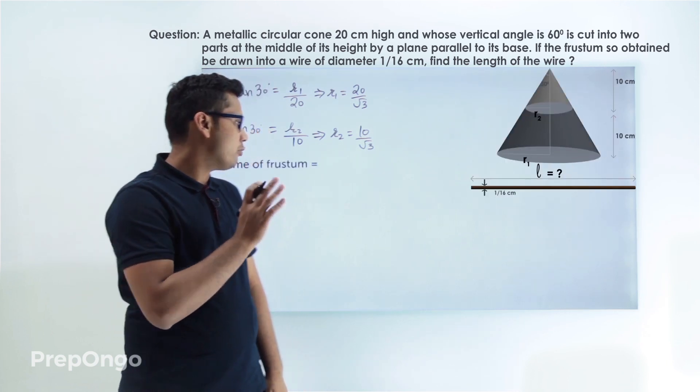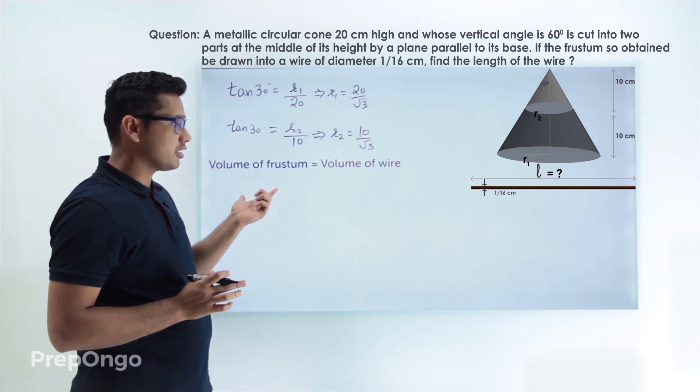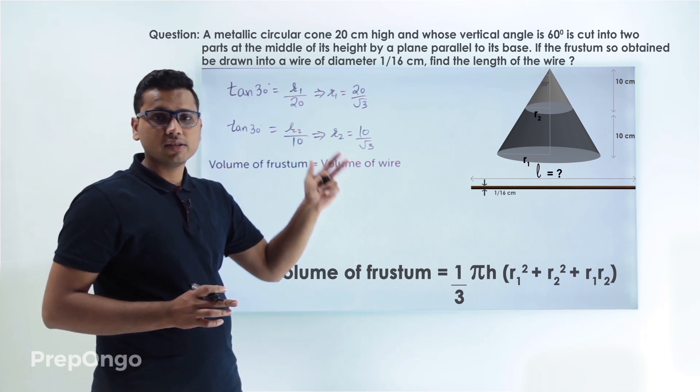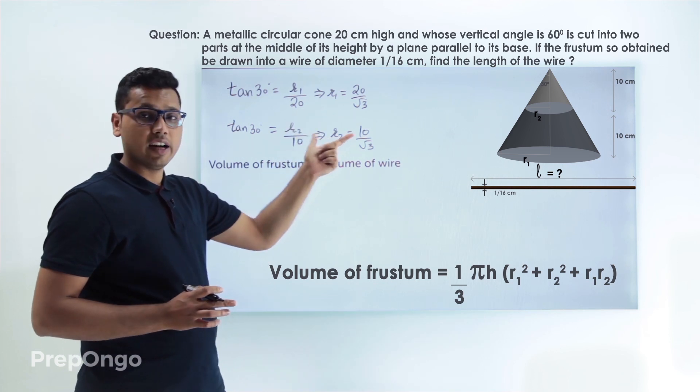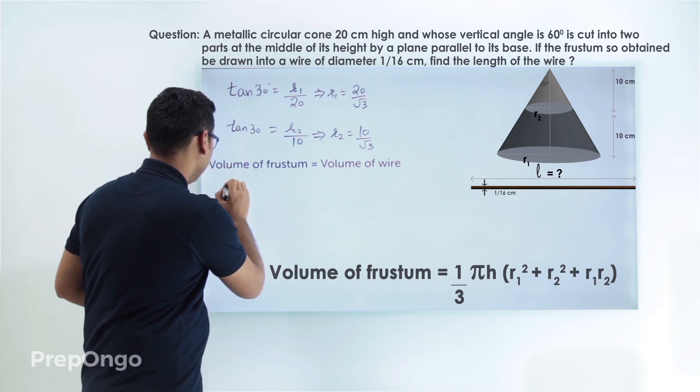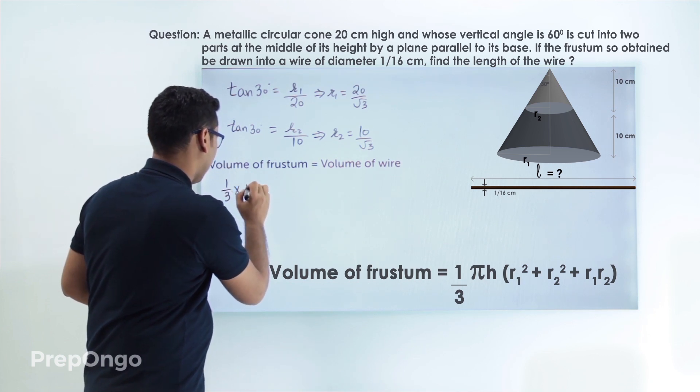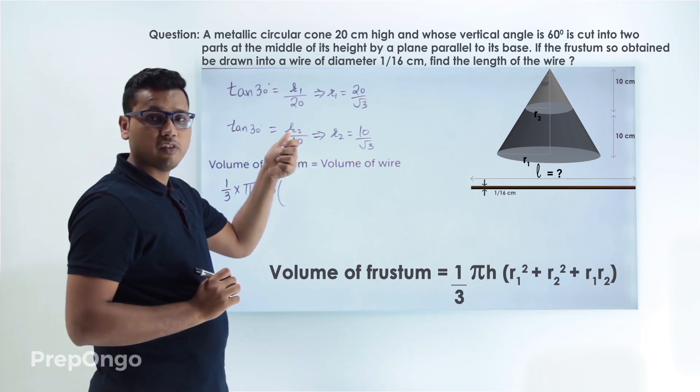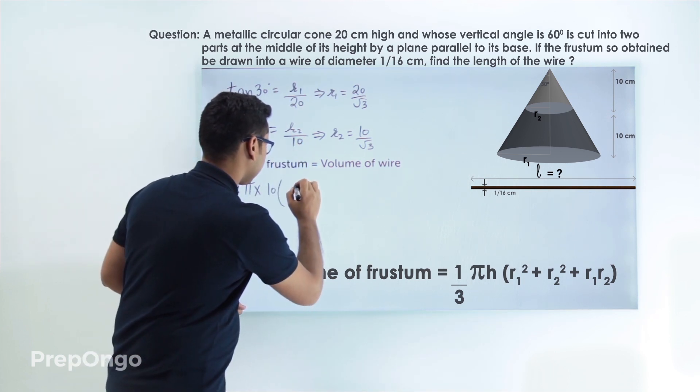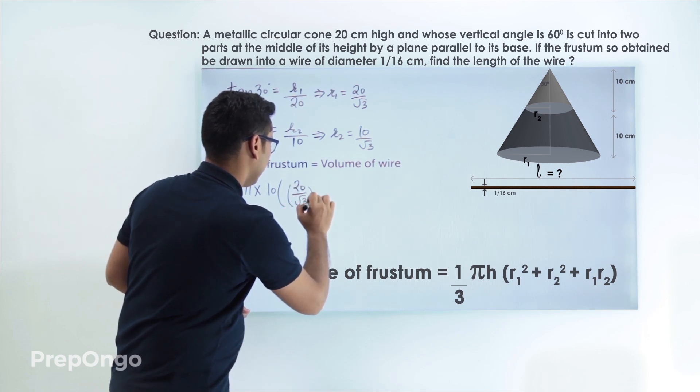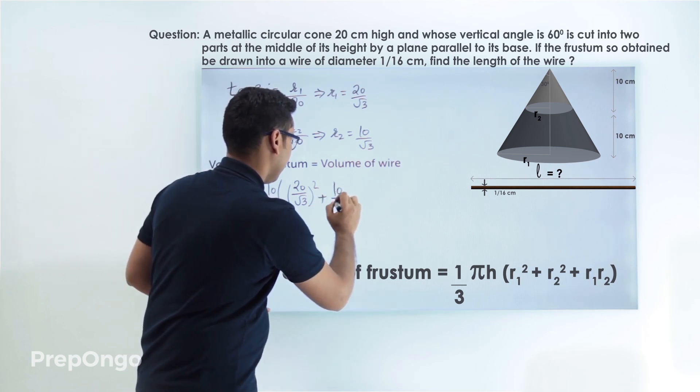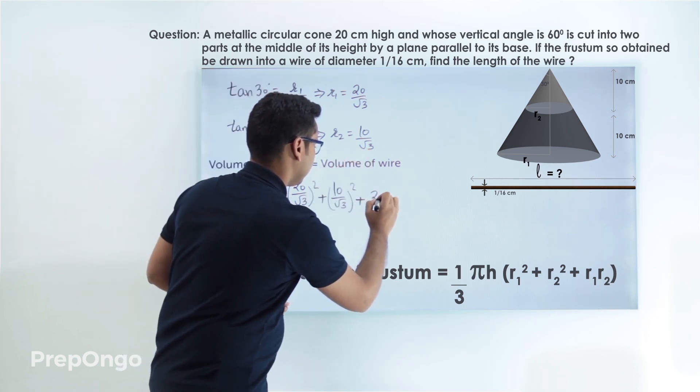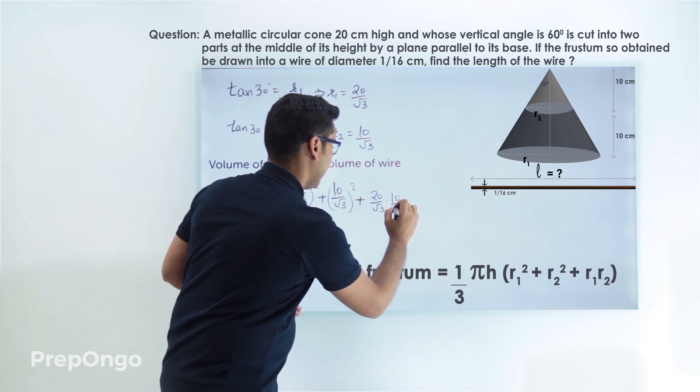So we can write down that the volume of frustum is equals to the volume of wire and we can find out the volume of frustum by a formula which is 1 by 3 pi h r1 square plus r2 square plus r1 r2 and we had already found out the values of r1 and r2. So just put the values. This will be 1 by 3 pi, the value of h is 10, and in bracket we have to put the values of r1 and r2. So this will be 20 by root 3 whole square plus 10 by root 3 whole square times r1 r2. So put the value of this also. This is 20 by root 3 into 10 by root 3.